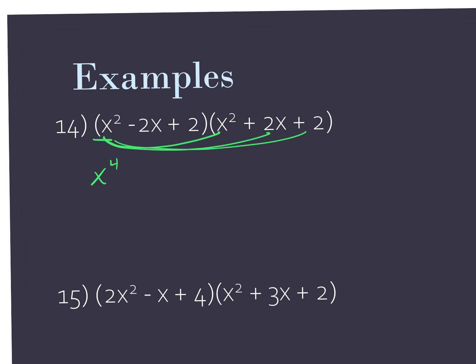Remember, when you multiply, you add the exponents. Then x squared to the 2x gives me 2x to the third. And then x squared times 2 is just 2x squared. What I like to do, instead of when I go to distribute this next term — this negative 2x — I'm not going to write it over here. What I like to do is write it underneath the like term.